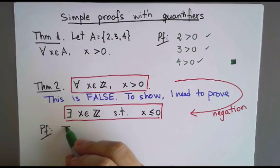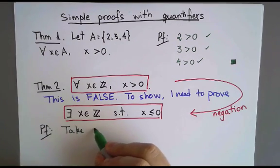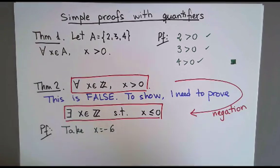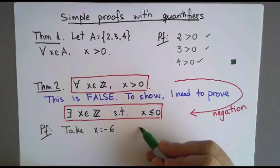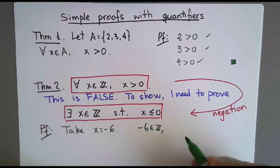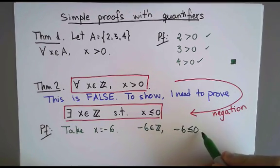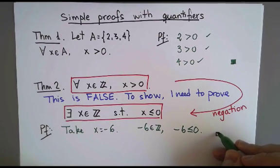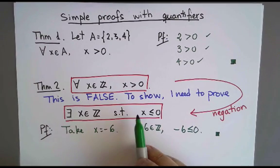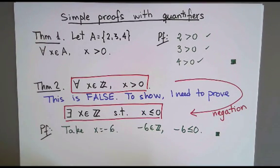So, for example, I'm going to say I will take x to be minus 6. I get to choose it, and as long as it works, only one is needed. Let's see. Minus 6 is certainly an integer, and minus 6 is certainly less than or equal than 0. That's it. There is nothing else to do. We've proven this is true, and therefore we've proven that that is false.